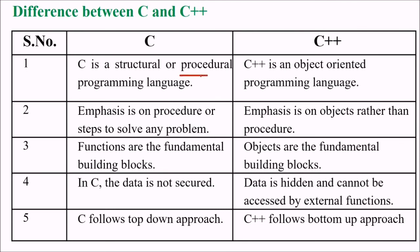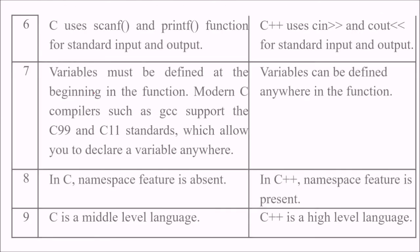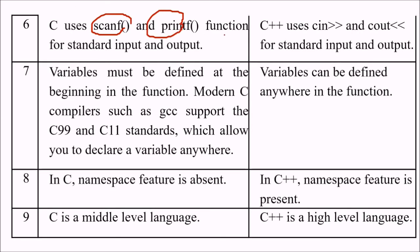C is a structured or procedural programming language, while C++ is object-oriented. In C, the emphasis is on functions, procedures, or steps to solve a problem. In C++, the emphasis is on real-life entities — that is, objects — rather than procedures. Functions are the fundamental building block in C, while objects are the fundamental building block in C++. Data is not secured in C, while data is hidden and cannot be accessed by external functions in C++ using public, private, and protected access specifiers. C follows top-down design, C++ follows bottom-up. C uses scanf and printf, C++ uses cin and cout.